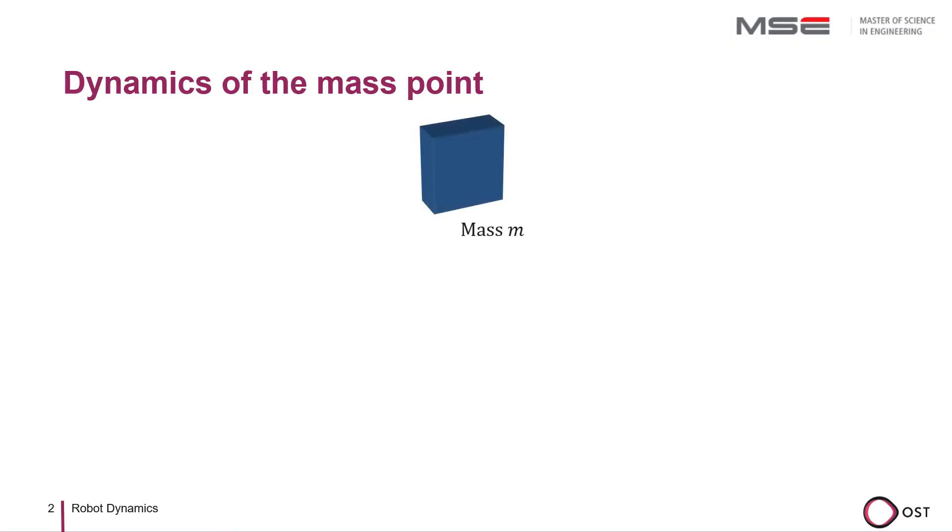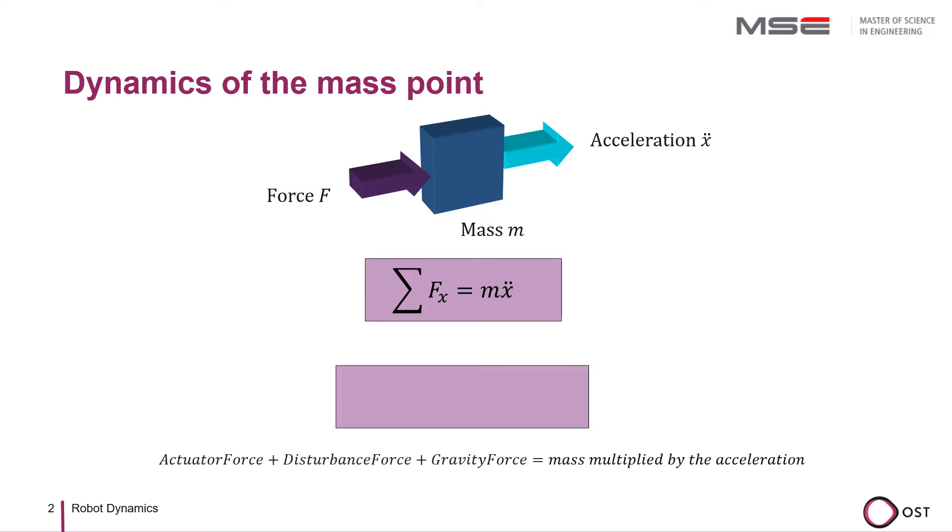I would like to describe the principle using the example of a point of mass. A force acts on the mass. This leads to an acceleration of the mass. According to Newton, the acceleration is proportional to the force. The sum of the forces is equal to the mass times the acceleration. This is described in this case for the x direction. Let us now write the equation for the spatial case as a vector equation and split the forces into partial forces.